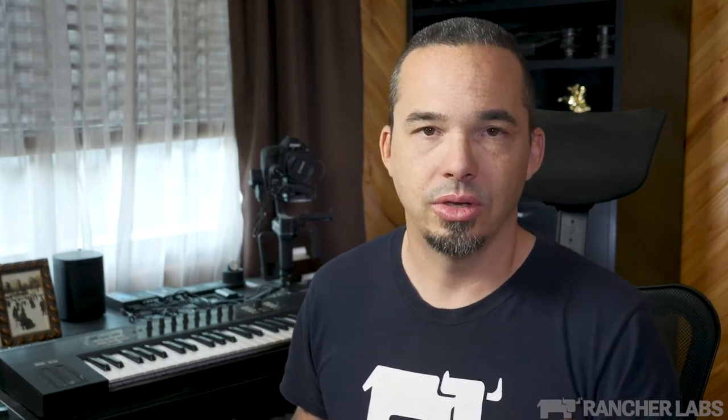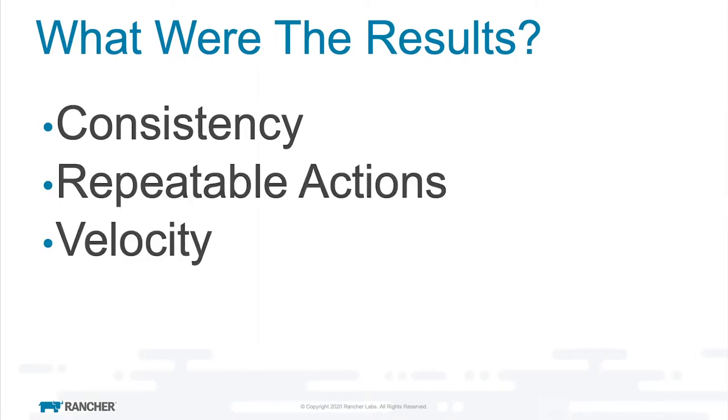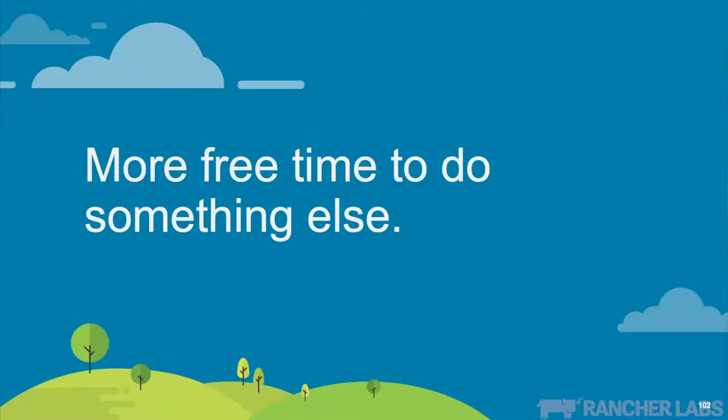Why do you do these things? Look at the processes that you've created — every one of them can be done a different way, some even manually, yet you chose automation. You built the instructions for an engine. Besides the actual thing that came out the other end, what was the result? Consistency. Repeatable actions. Velocity. And more free time to do something else. Ultimately, DevOps gets you from wherever you are to wherever you want to be faster than if you just did it yourself.